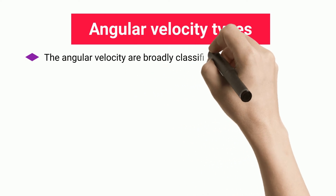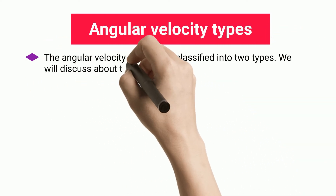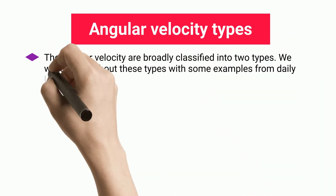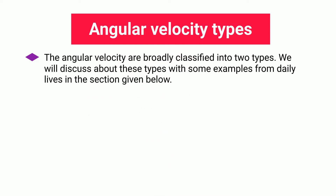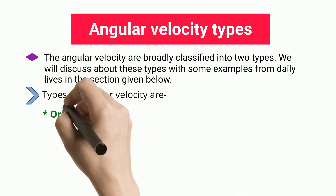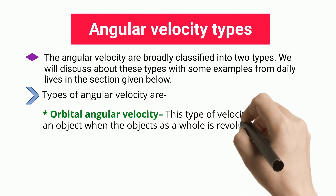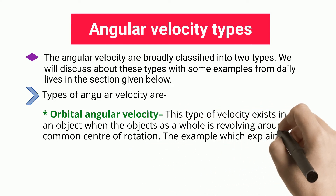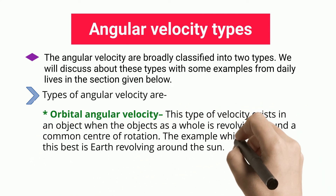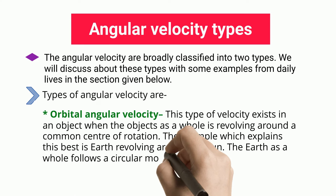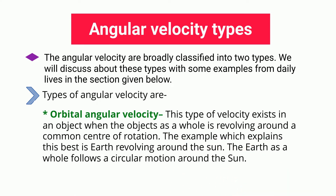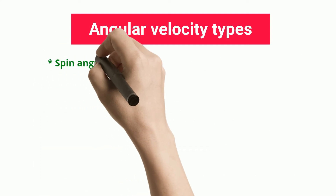The two types of angular velocity will be discussed with examples from daily life. The first type is orbital angular velocity, which exists when an object as a whole revolves around a common center of rotation. The best example is Earth revolving around the Sun — the Earth as a whole follows circular motion around the Sun.